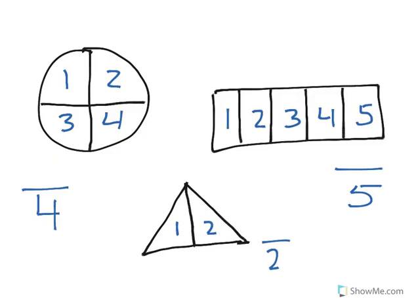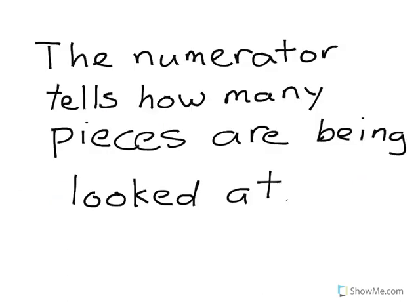One thing you may notice is that as the denominators get bigger, the pieces start to get smaller. The numerator tells us how many pieces are being looked at — this is the top part of the fraction.